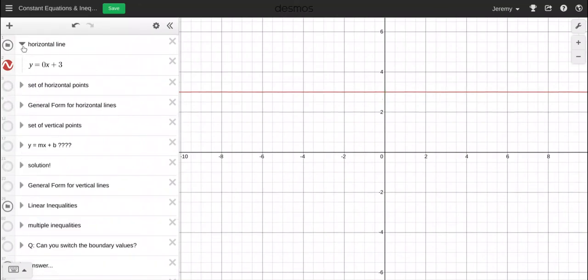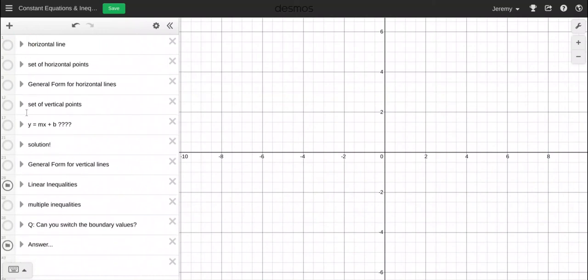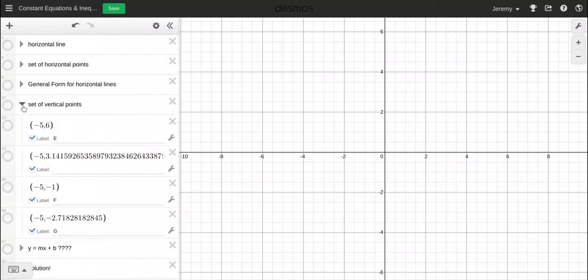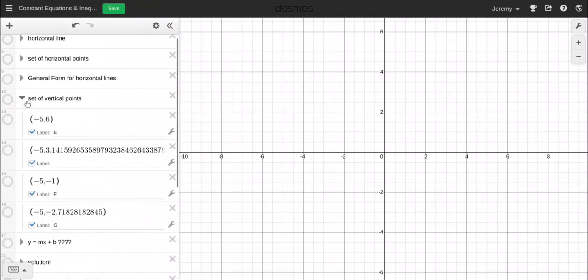So now we've done horizontal lines. What about vertical lines? Well, let's start with some vertical points. So we have these points right here. What do all these vertical points have in common?